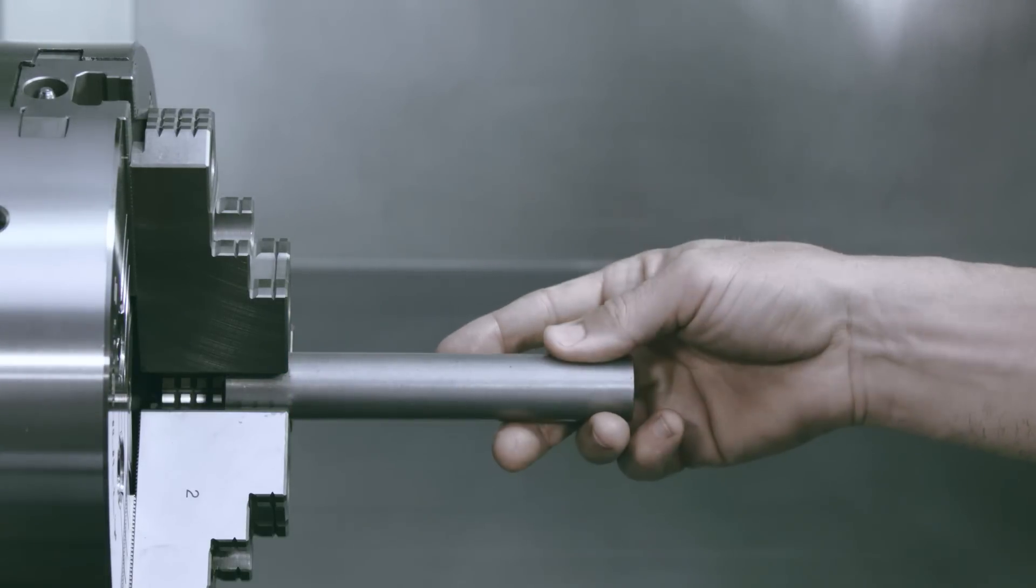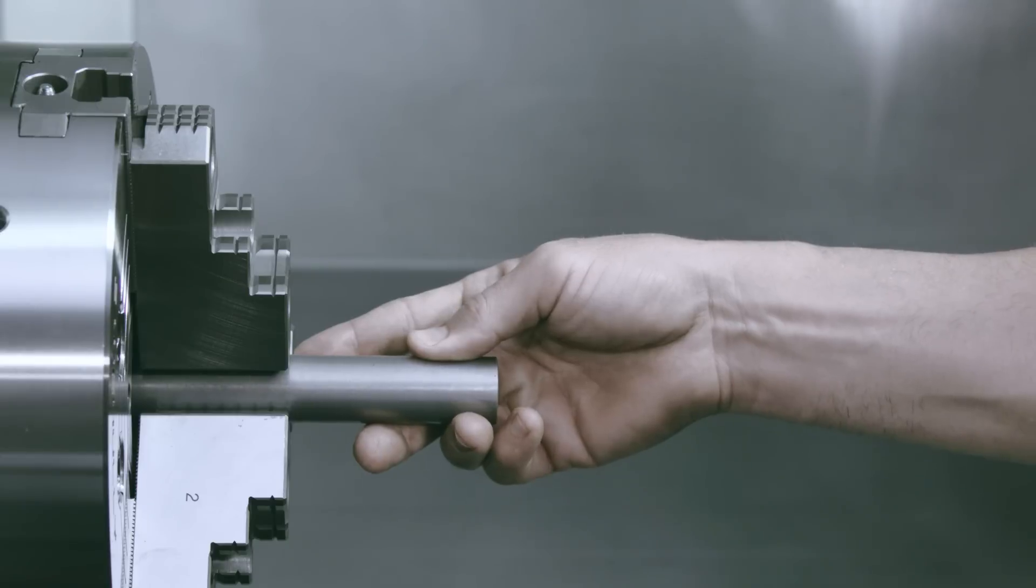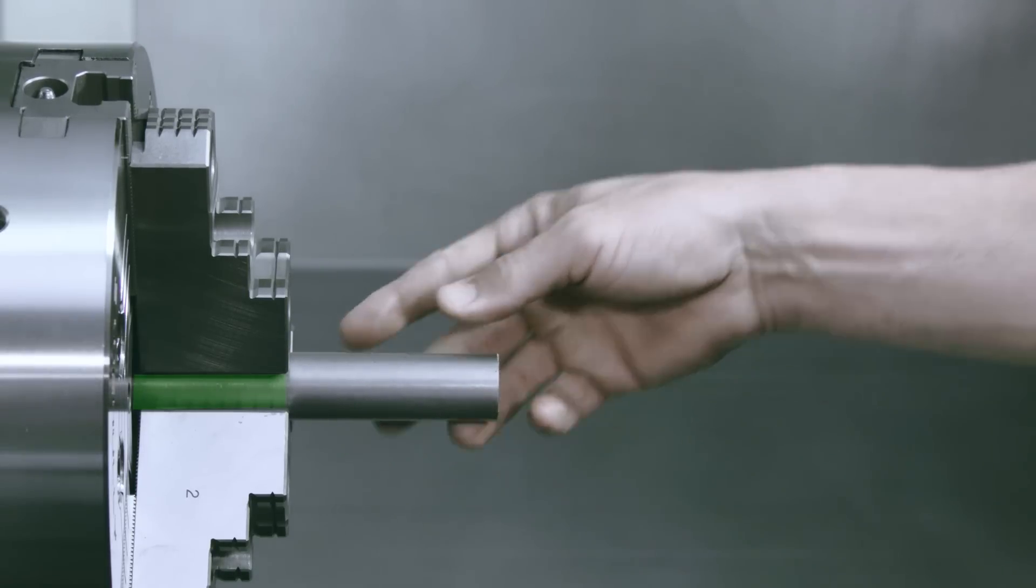This unsupported region is what we need to consider. With this much of the workpiece hanging out, there will likely be problems cutting unless tailstock support is added. However, the same 6 to 1 part, clamped with only 3 inches hanging out, will probably not need tailstock support.